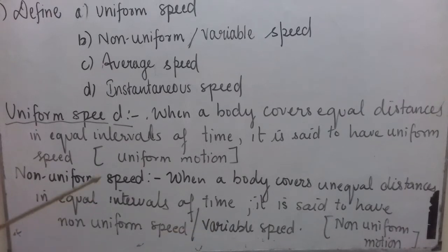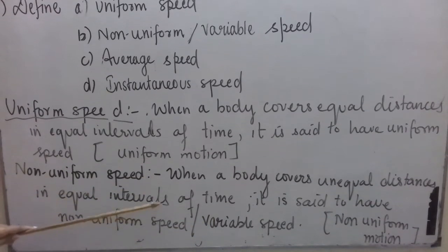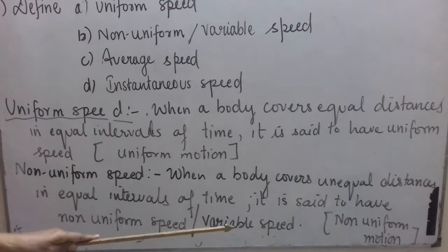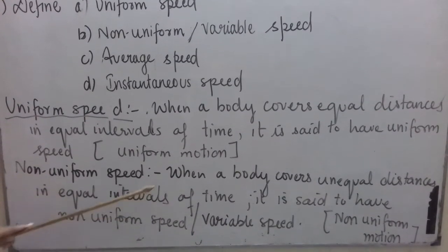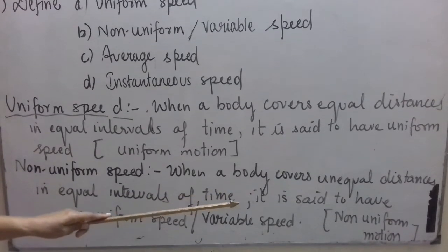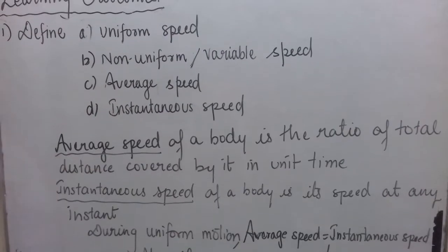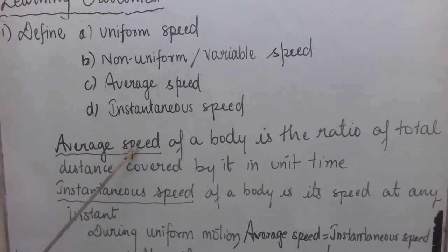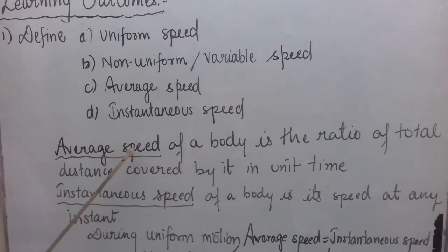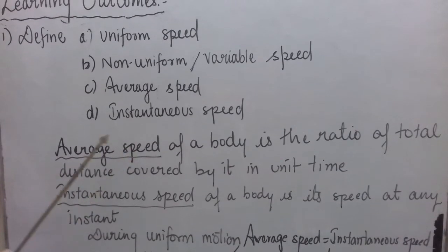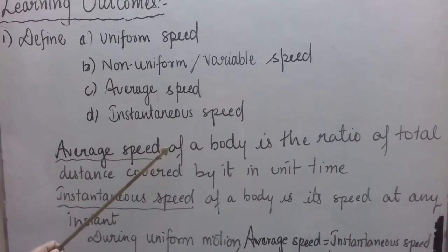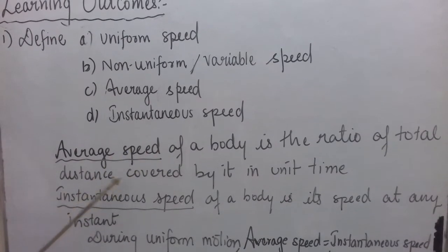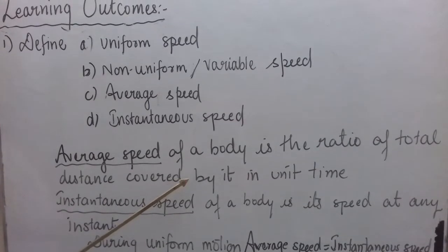Again, we can use the same sentence to define non-uniform motion: when a body covers unequal distances in equal intervals of time, it is said to have non-uniform motion. Average speed of a body is the ratio of total distance covered by it to the total time taken.